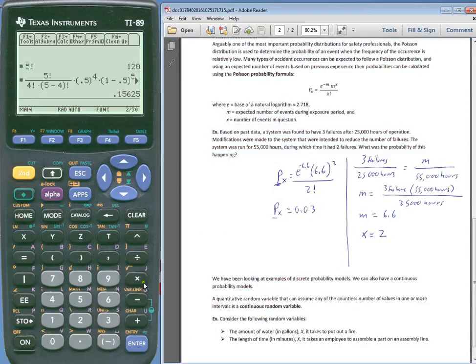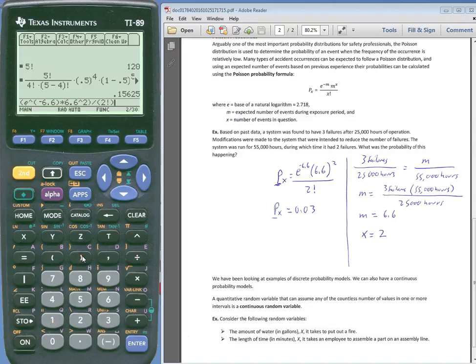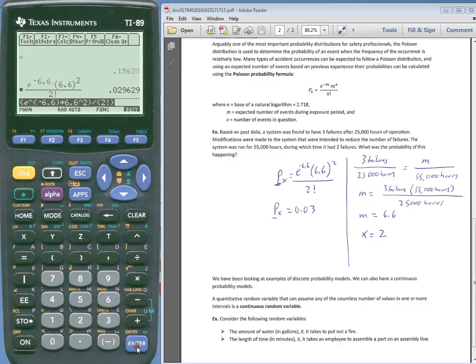So for this, we are looking at, the numerator is e raised to the negative 6.6 power, times 6.6 raised to the second power. And then all of that divided by 2 factorial. And that gets us 0.03 or 0.029629, depending on how many decimal places you want to carry. Usually you don't carry too many decimal places.